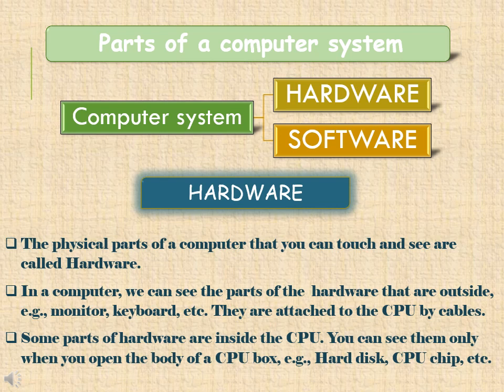Some parts of the hardware lie outside the computer system. Other parts of the hardware are inside the CPU box. Examples include hard disk, CPU chip, motherboard, etc.